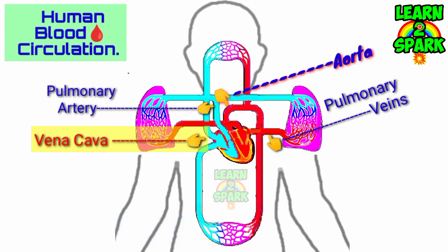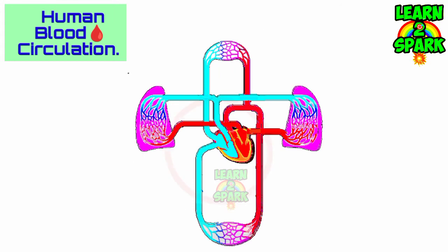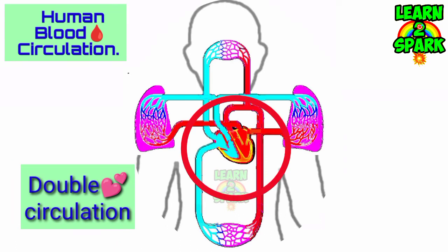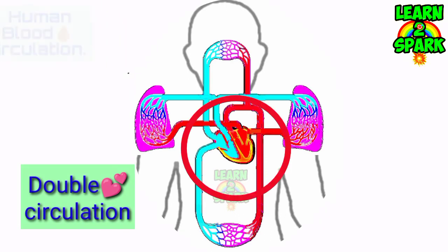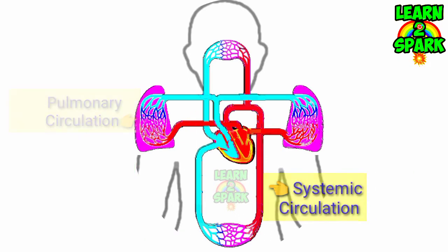Therefore, it is quite clear that blood circulates twice through the heart for completing one round of circulation throughout the body. For this reason, it is called double circulation — that is, pulmonary and systemic circulation.